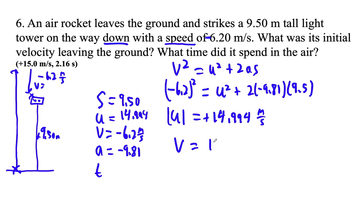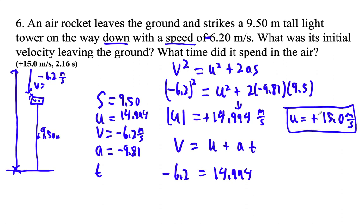So V is U plus AT. Final velocity is negative 6.2. Initial velocity is 14.994. Oh, we would round that, by the way. If we had to round it to three sig figs, we'd say the initial velocity is positive 15.0. I'm just putting the plus on there to emphasize that it is going up.